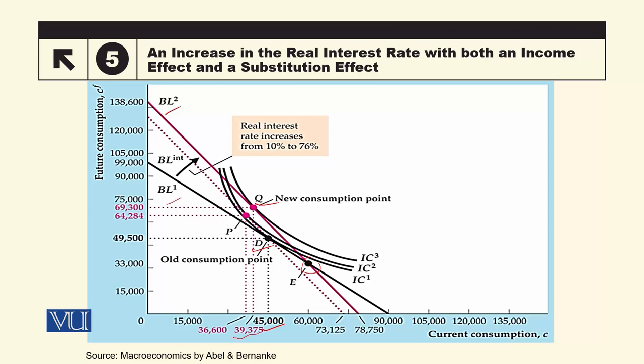Interest rate کے زیادہ ہونے سے current consumption expensive ہو گئی ہے اور future consumption relatively cheap ہو گئی ہے، تو اس نے current consumption کو کم کر دیا۔ Q کو D سے compare کریں تو Q پر future consumption پہلے سے زیادہ ہو گئی ہے — D پر 49,500 کی بجائے اب 69,300 ہو گئی ہے۔ اوورال total effect of this increase in interest rate — اب ہم اس effect کو decompose کرنا چاہتے ہیں between substitution effect and income effect۔